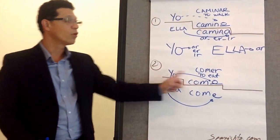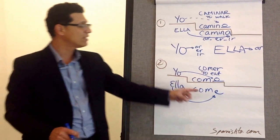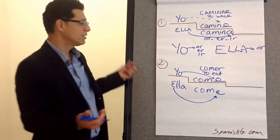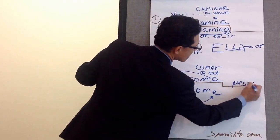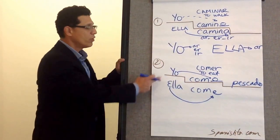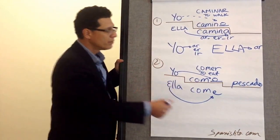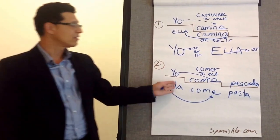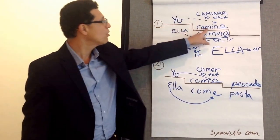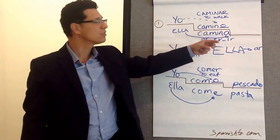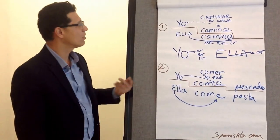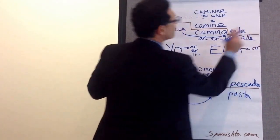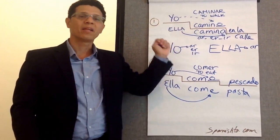So yo como, ella come. If you want to complete the sentence, we need an object. Some food, for instance — pescado. Yo como pescado. Ella come pasta. There you have a complete sentence. Up top: yo camino means I walk, or ella camina. We need an object to complete the sentence, so: yo camino en la calle. Ella camina en la calle.